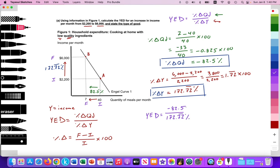So YED is going to equal percent change in quality, which is negative 82.5, divided by 172.72 repeating. And that works out to negative 0.477. And on an exam, they will ask you to state numerical answers exactly or correct to two decimal places. So we'll say that this is negative 0.48. So there is our final answer.